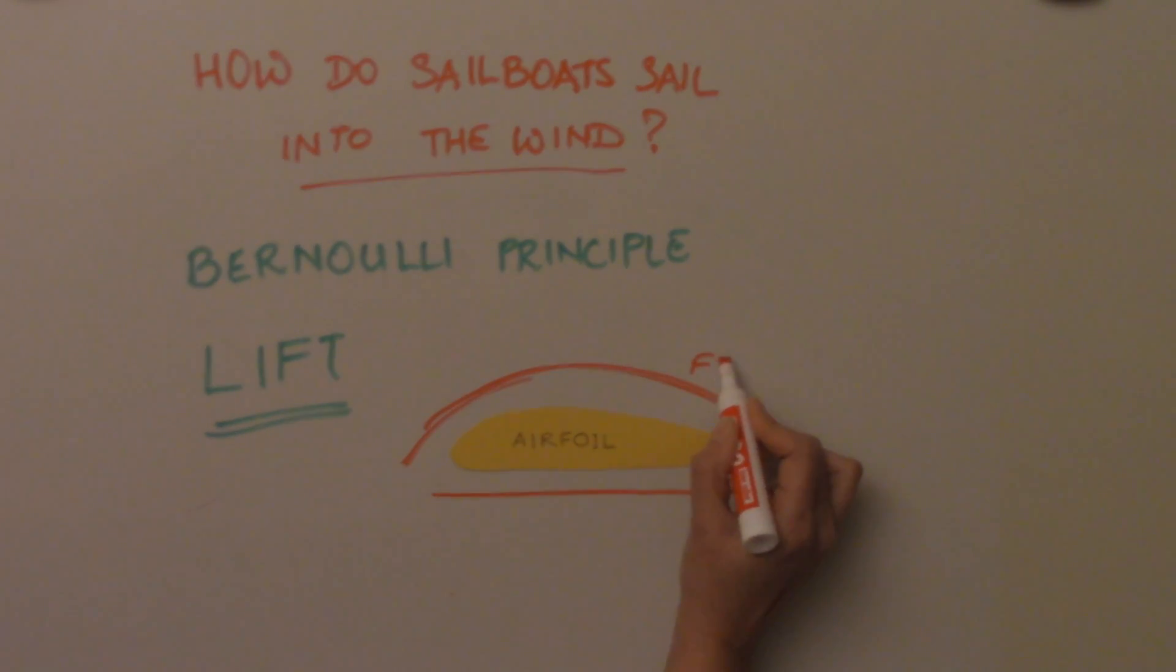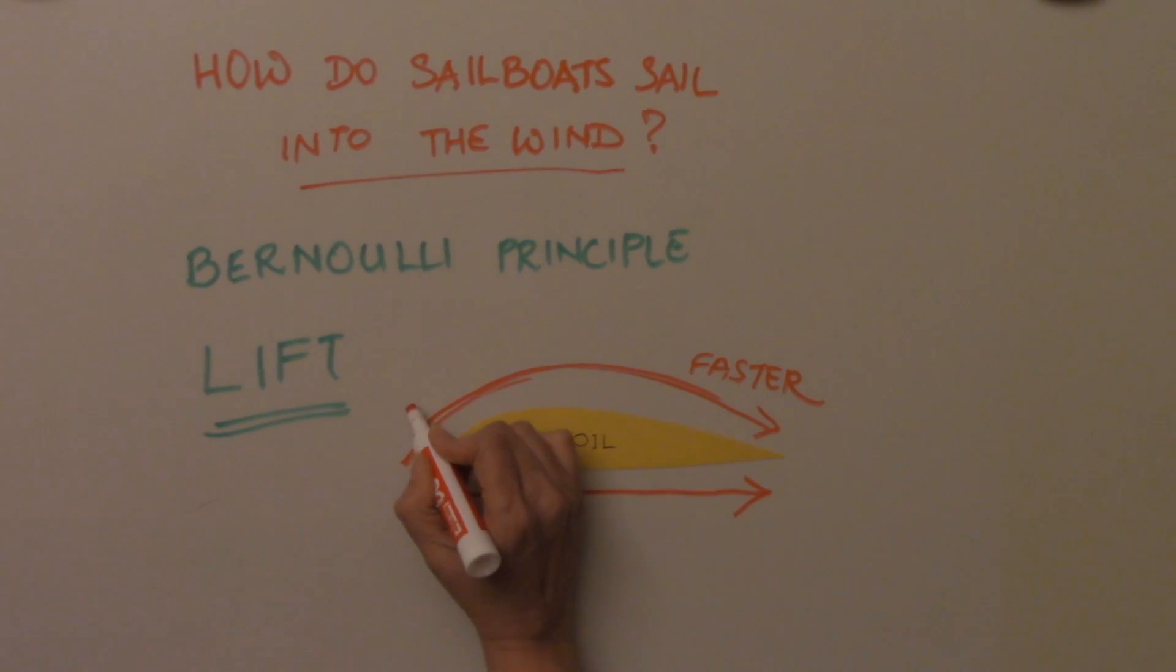That's where the Bernoulli principle comes in. Air is a fluid, and the Bernoulli principle tells us that when a fluid begins to increase in speed, its pressure decreases. So, when the airfoil moves, the faster air above it has lower pressure, while the slower air below has high pressure.